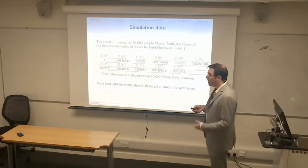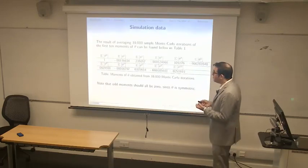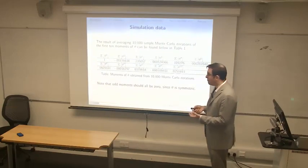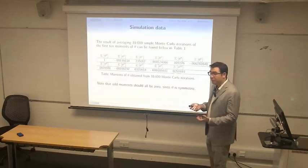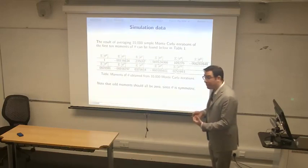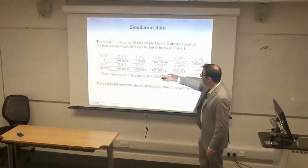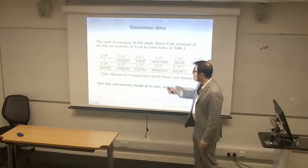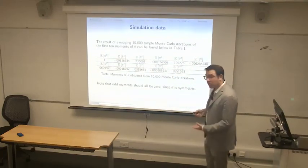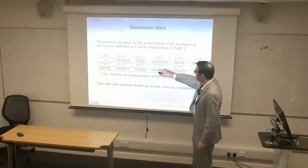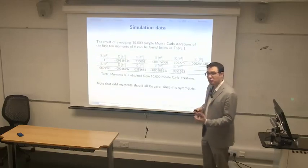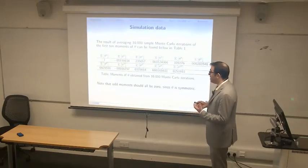We can do a Monte Carlo iteration of the first 10 moments of theta. Theta is an odd function, so the odd moments are zero — the first moment is near zero, the third moment is near zero, and so on. But the second moment is important: taking the square root gives something close to 0.5. And that's the issue.